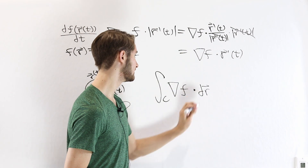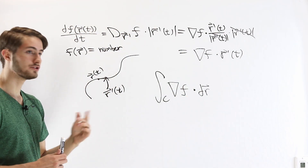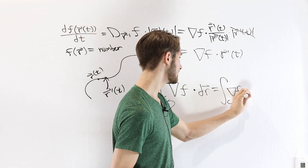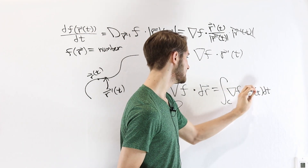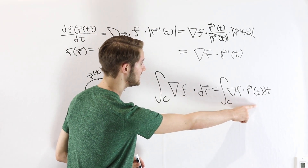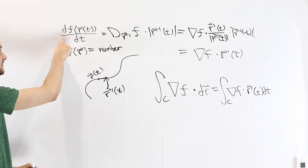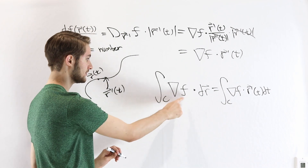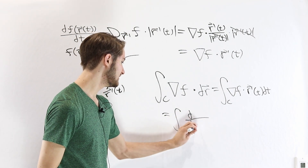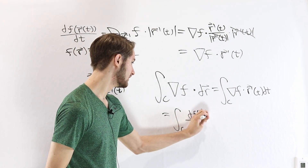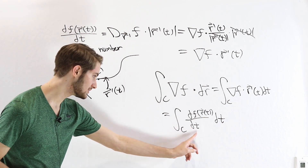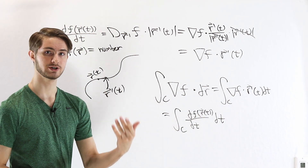We have the integral of the gradient of f dotted with dr. We can expand dr so that we get the gradient of f dotted with r'(t) dt. What we have on the inside — the gradient of f dotted with r'(t) — is the derivative of f(r(t)) with respect to t. So this integral, the gradient of f dot dr, equals the line integral of d/dt of f(r(t)) dt.